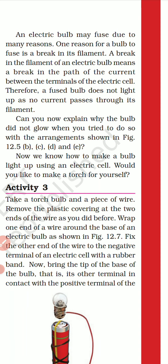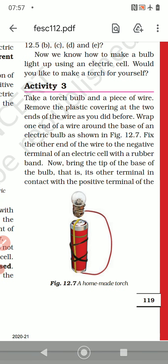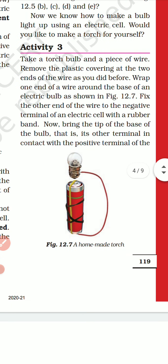Would you like to make a torch for yourself? Children, you have to make a torch and show it to me. In this chapter, there is an activity comprising five marks — making of an electric circuit. Activity 3: take a torch and a piece of wire. Remove the plastic covering at the two ends of the wire as you did before. Wrap one end of the wire around the base of an electric bulb as shown in figure 12.7.